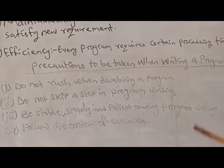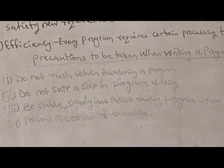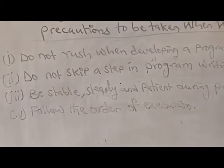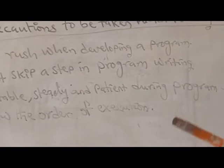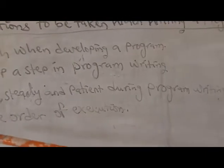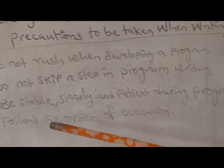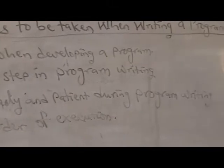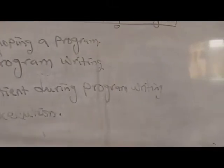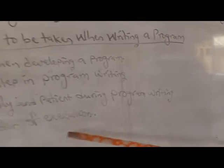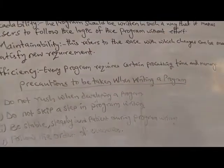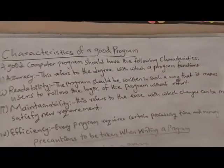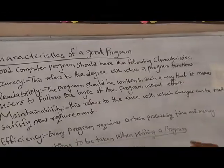The third precaution is to be stable, steady, and patient during program writing. Just as I showed you in basic programming, you must be stable so that you don't make mistakes. The fourth precaution is to follow the order of execution. When writing programs in BASIC, after writing you save the file with a .bas extension, then run the program and it will execute.